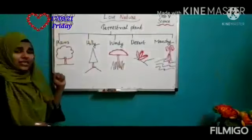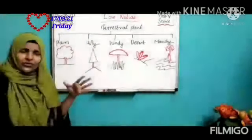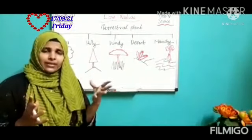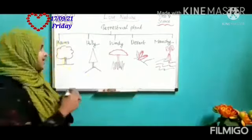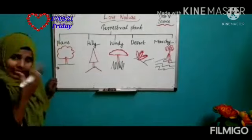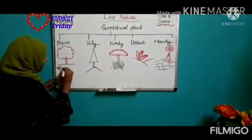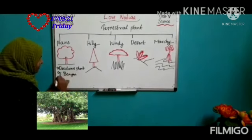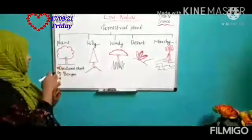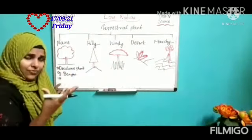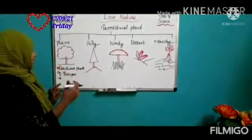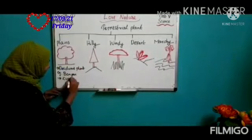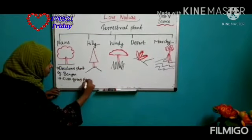First, plants living in plain regions. In plains, the climate is generally dry, but sometimes there is little rainfall and hot weather. In seasons with little rainfall, plants shed their leaves — we call these deciduous plants. In seasons with full rainfall, plants stay fully green throughout the year — we call these evergreen plants.